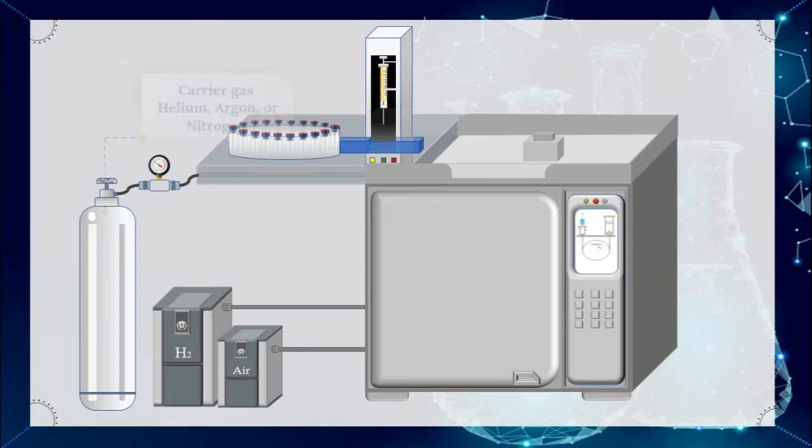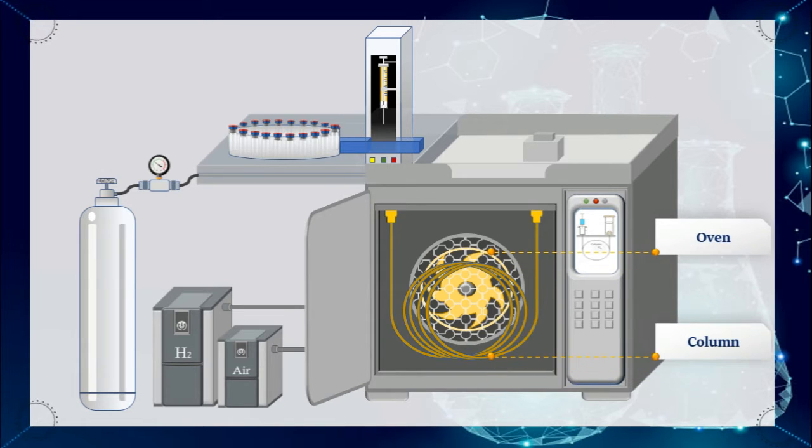In gas chromatography, there is a mobile phase which is a carrier gas, such as helium, nitrogen and argon. And there is a stationary phase, called a column, which is located in an oven where the temperature of the gas can be controlled.